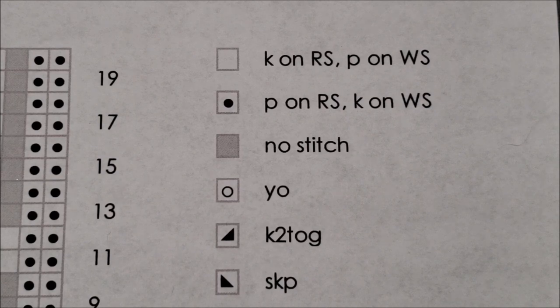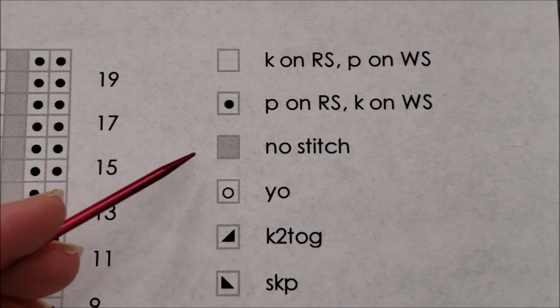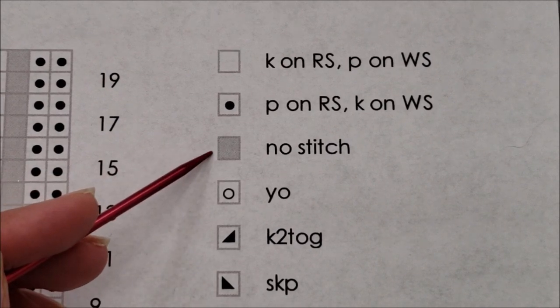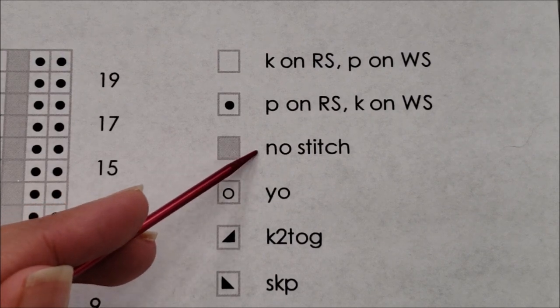This one stumps just about every knitter the first time they see it. The symbol is usually just a shaded in square, although it could be represented differently, and it means no stitch.